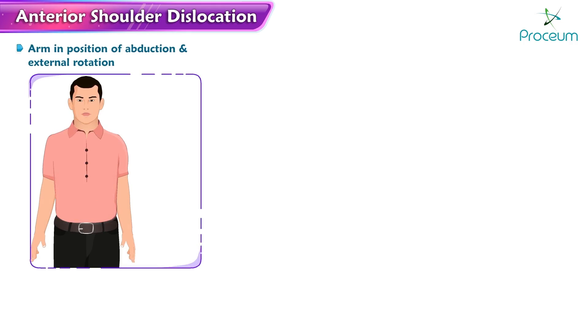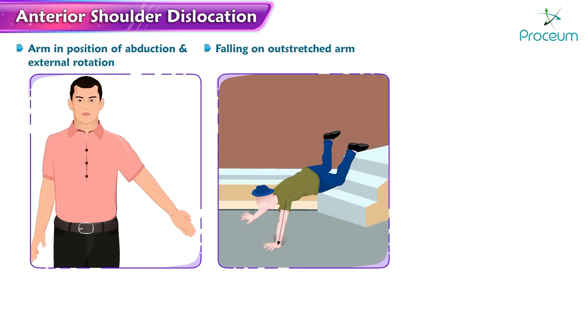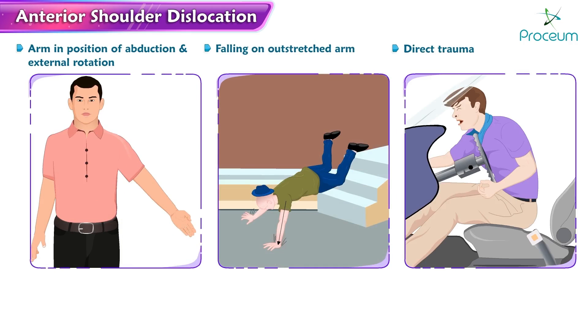Anterior shoulder dislocations typically occur when the arm is in a position of abduction and external rotation, such as during a fall on an outstretched arm or due to direct trauma.